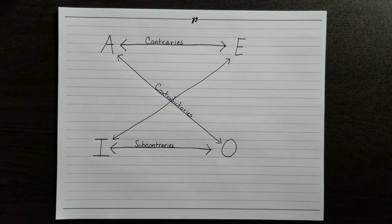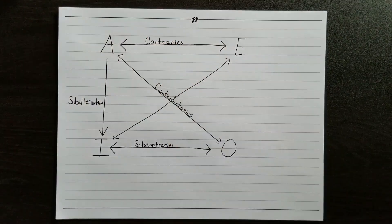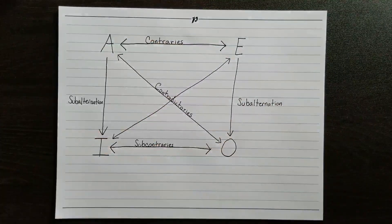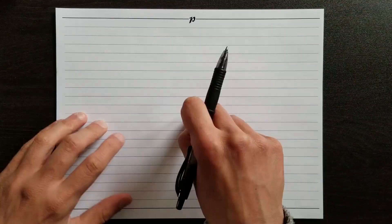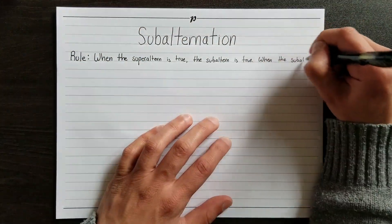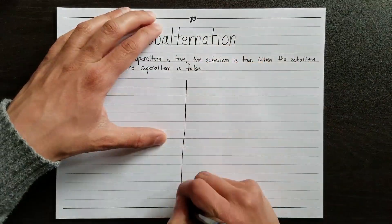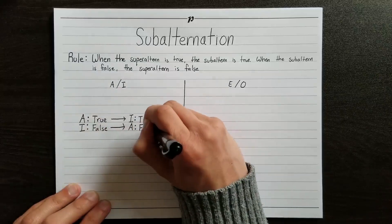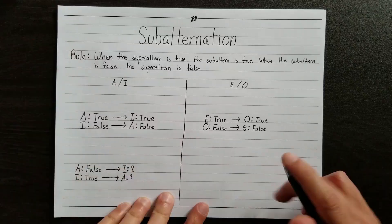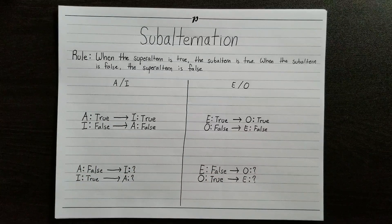The next and final relation — and the most complicated — is subalternation. This relation holds between A-type and I-type statements, and between E-type and O-type statements. Notice that the arrow only points down — this will be important. The rule for subalternation goes like this: when the superaltern, the statement at the top of the square, is true, then we know that the subaltern, the statement at the bottom of the square, is also true. This is why the arrow points the way that it does. When the subaltern is false, then we know that the superaltern is also false. But that's all we can know — if the superaltern is false, we don't know anything about the subaltern, and when the subaltern is true, that doesn't tell us anything about the superaltern.